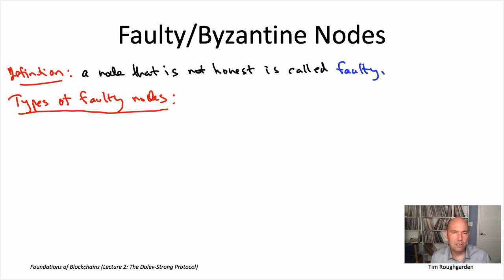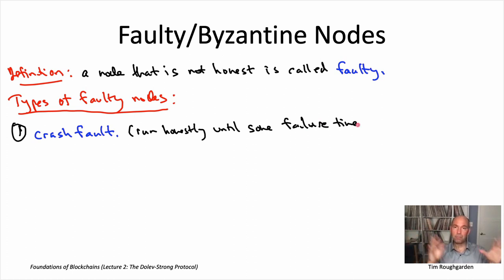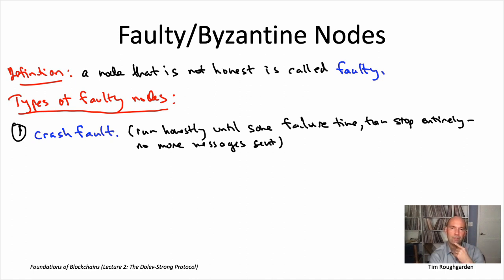The first type of fault is a crash fault. You're a machine running a protocol and literally someone pulls out the plug and the machine goes down. This means you start at time zero, behave honestly up till some failure time T star, and then after T star it doesn't participate in the protocol at all — no messages received, no messages sent. You can imagine why researchers thinking about database replication back in the 1980s would be interested in crash faults: IBM running seven different machines, the primary concern was hardware failures. You're only worried about machines going down, less worried about software bugs, not worried at all about malicious attacks.